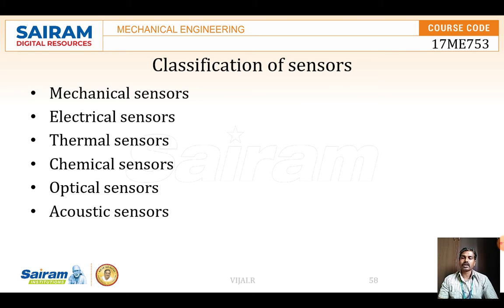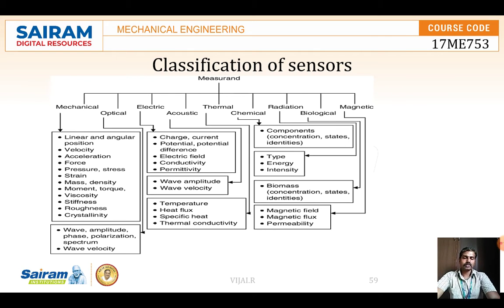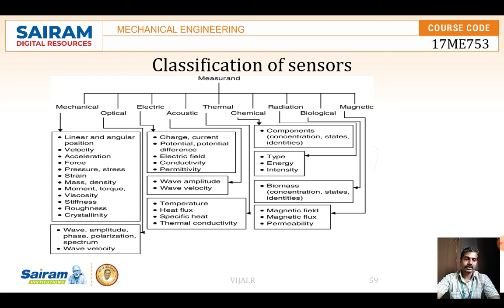The classifications are: mechanical sensor, electrical sensor, thermal sensor, chemical sensor, optical sensor, and acoustic sensor. For mechanical sensors — in industries, if we want to measure linear or angular position of a component, how far it has moved or what angle it has rotated, we can do so with the help of sensors. Linear movement and angular movement can be measured with mechanical sensors.